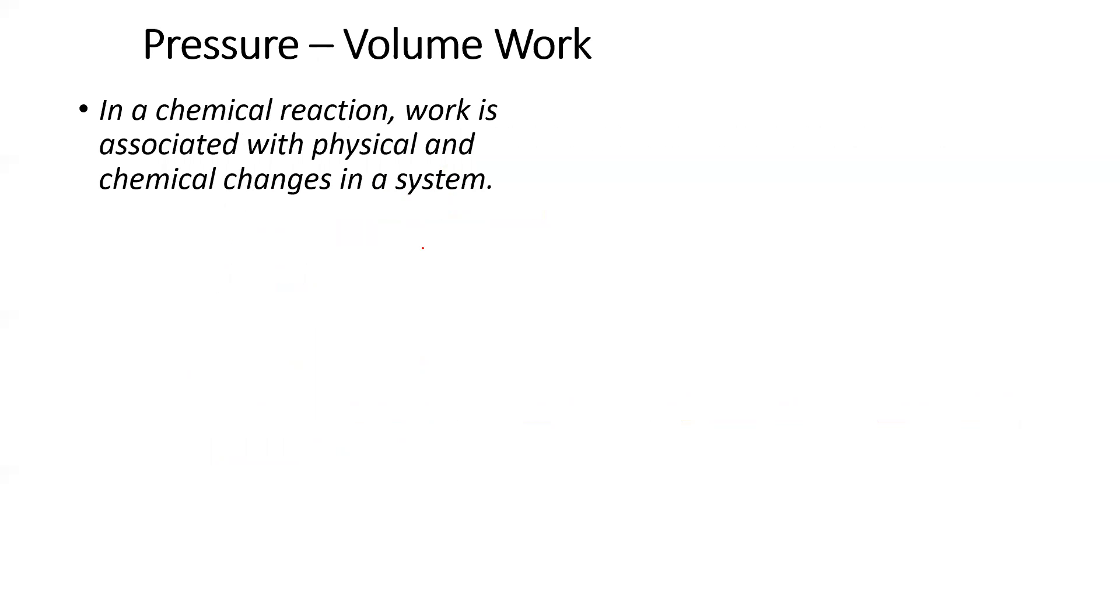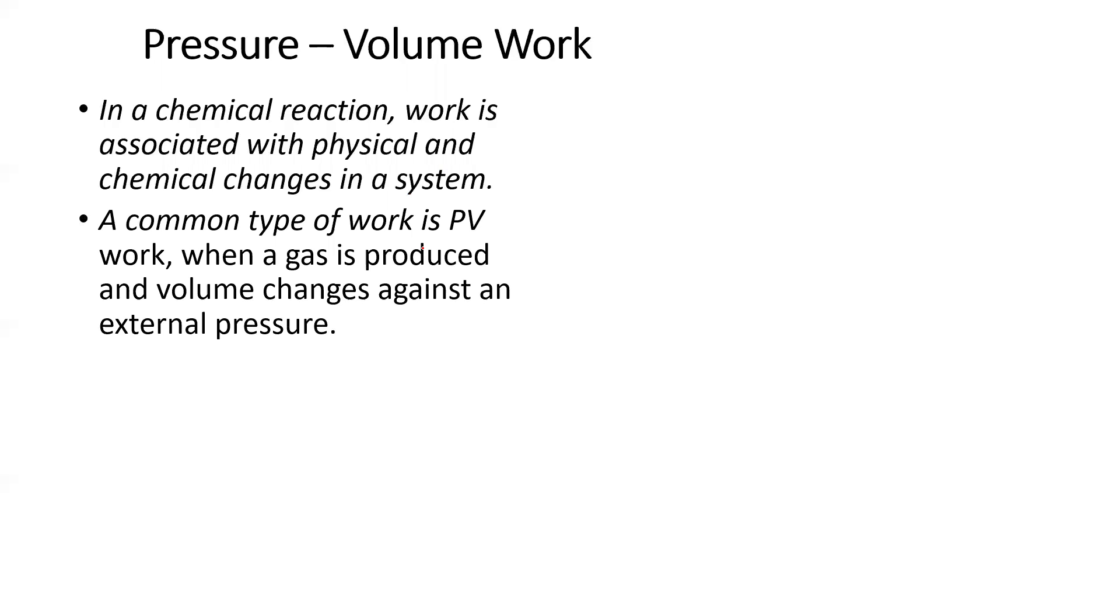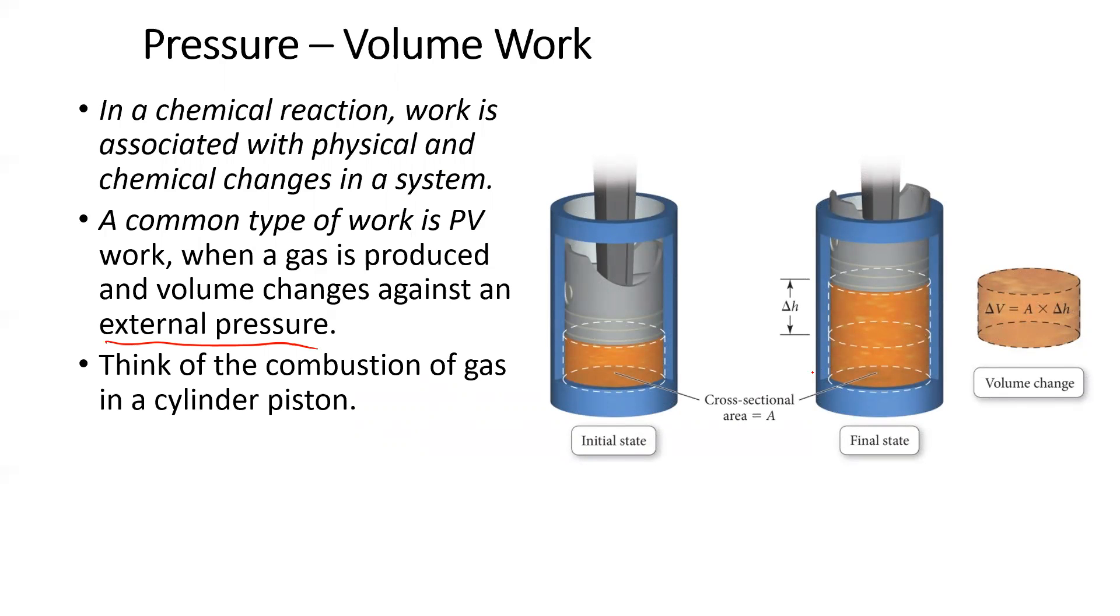So typically in a chemical reaction, work is associated with physical and chemical changes within that reaction or that system. So what do I mean physical changes? Well, a common type of work is pressure volume work when a gas is produced and volume changes against an external pressure. And what I mean is at a constant pressure, that's an external atmospheric pressure. If gases are being produced, the gases have to expand. For the gases to expand and push back the atmosphere, that's work. It requires that system to do work. So think of combustion reactions. And we take advantage of this in a cylinder or a piston. So you burn fuel. And when you burn fuel, a combustion reaction, gases are produced.